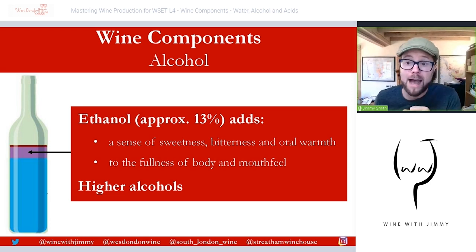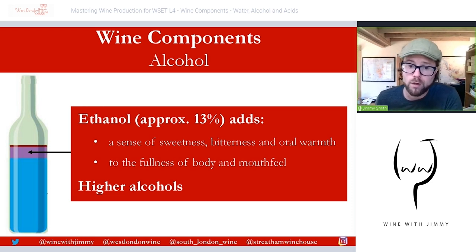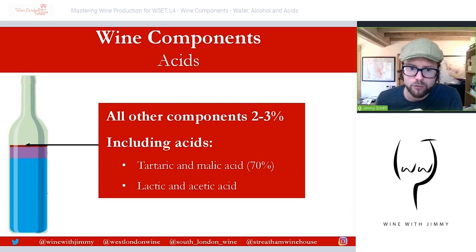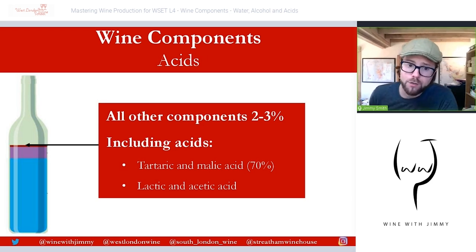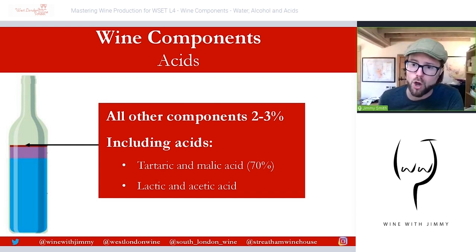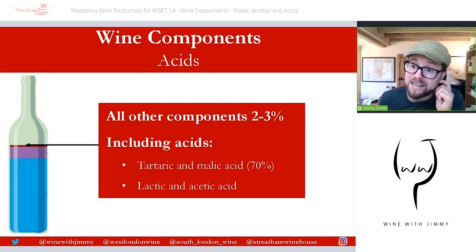Wines with higher alcohols will need balancing factors — such as fruit concentration — otherwise the wine will seem out of balance. There are also traces of other higher alcohols which can have a pungent smell, and both ethanol and the higher alcohols can contribute to the aromas of wine. The big category is acids: the principal acids in wine are tartaric and malic, accounting for around two-thirds to 70% of the wine's acidity, coming from the grape itself.